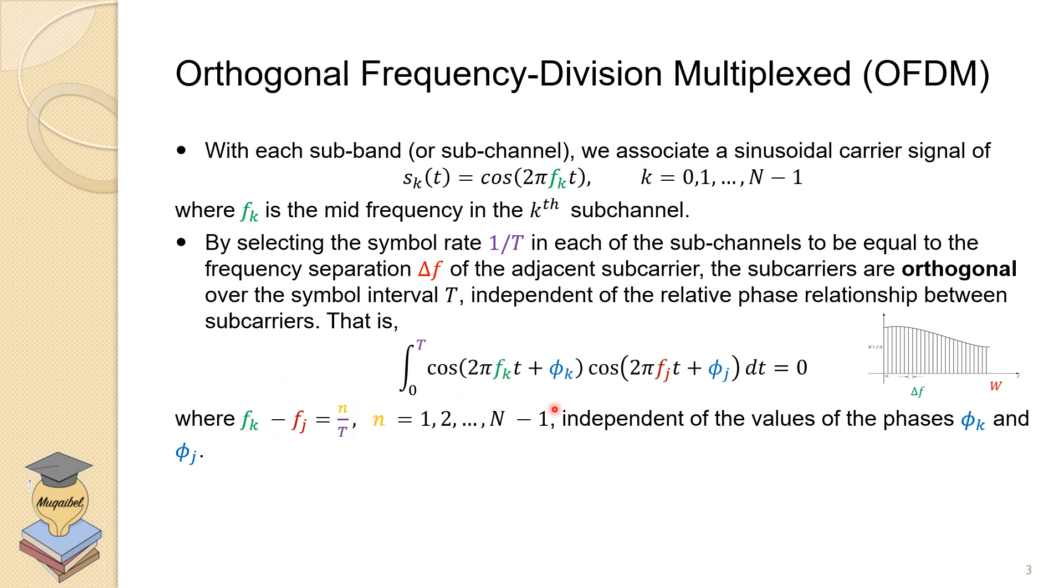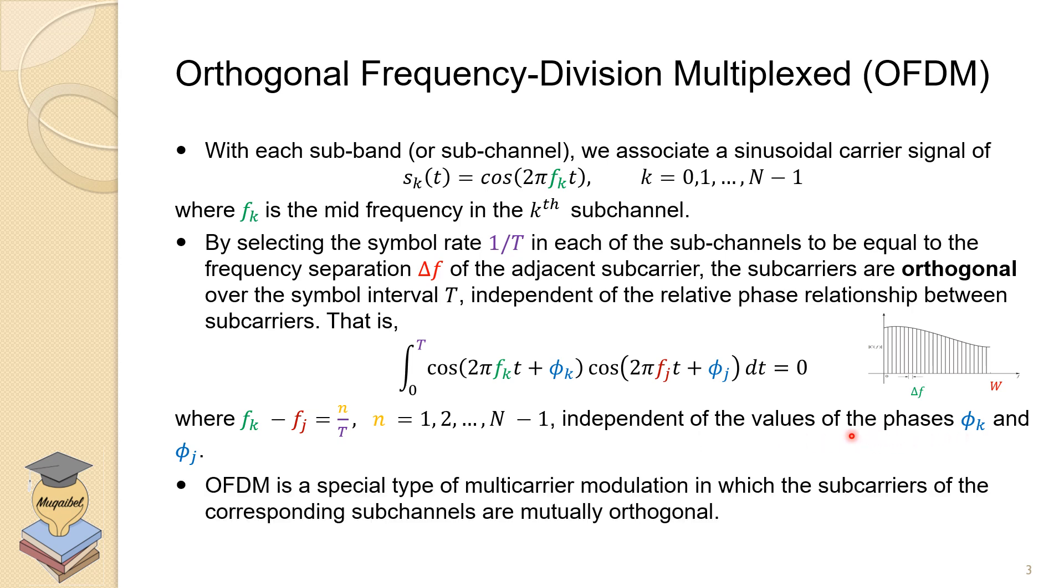So it's n divided by T. If we guarantee this, then we will make sure that the signals are orthogonal. And that's the name orthogonal frequency division multiplexing. So the first condition is that selection of the frequencies is not random. And if we guarantee the frequency, then we guarantee that they are going to be orthogonal even irrespective of the phase shift, independent of the value of the phases.